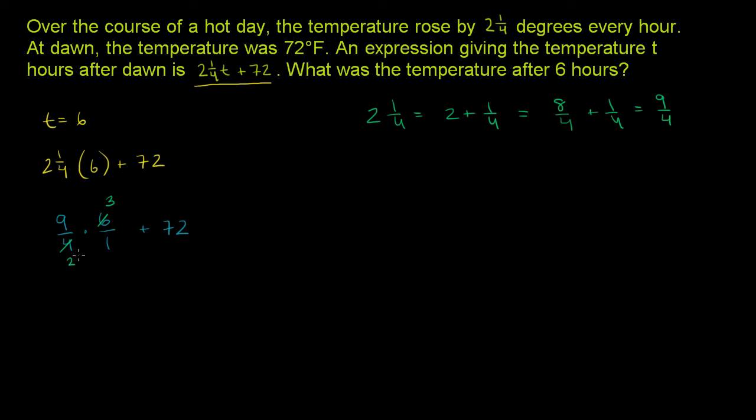So this is going to become 27, 27 over 2. That's this part right over here, plus 72.